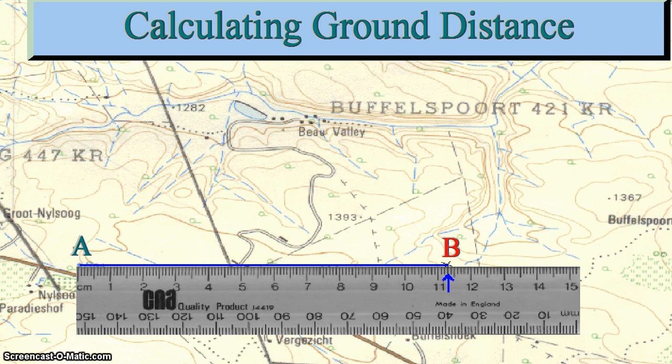This distance from A to B, which is 11.3 centimeters, is known as the map distance. You want to calculate the actual distance, which is known as the ground distance, from A to B in kilometers.